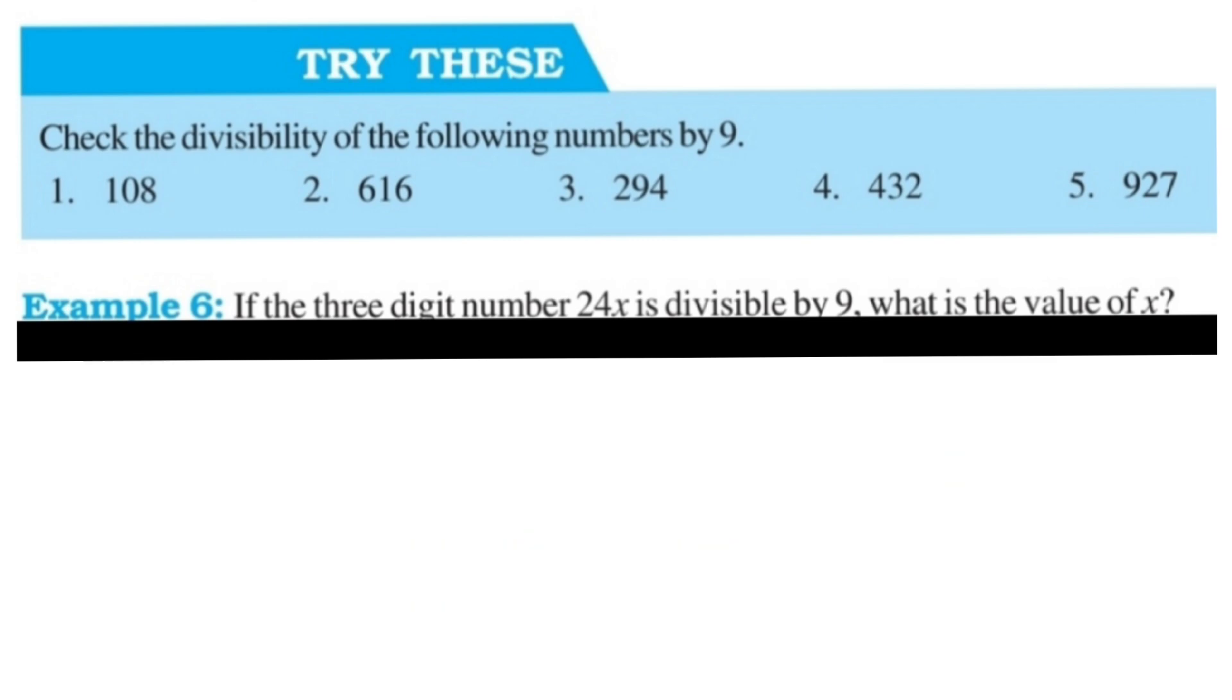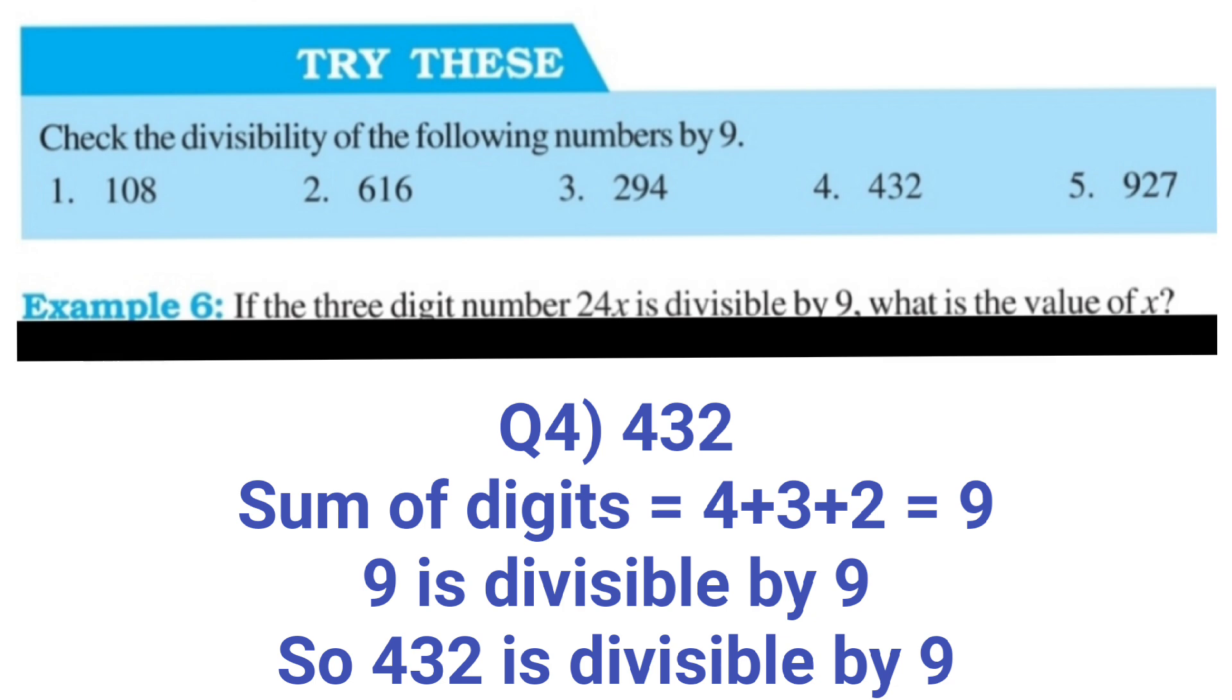Now find the sum of digits of 432. 4 plus 3 plus 2, that is equal to 9. And 9 ones are 9, you know that 9 is also divisible by 9. So yes, 432 is divisible by 9.